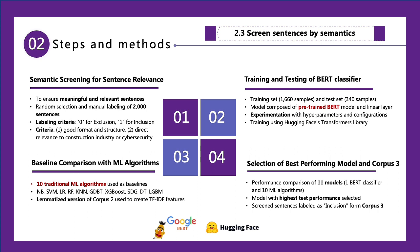We experimented with different hyperparameters and configurations using a training set and a test set. Lastly, we compared the performance of the 11 models in total, including the BERT classifier and the traditional machine learning algorithms. The model with the highest test performance was selected, and the sentences screened for inclusion formed our third corpus.